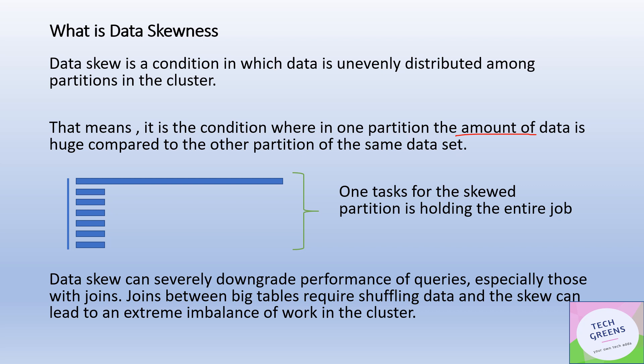When a Spark job is running, there are different tasks for different partitions. All tasks for the smaller partitions finish on time, but the job keeps waiting for the task tied to the skewed partition to complete. This holds up the entire Spark job, and parallelism becomes useless because the other tasks are already finished but must wait. The skewed task can take forever, severely degrading performance — especially for operations requiring data shuffling, like joins and aggregates.